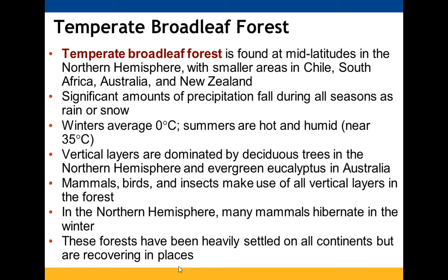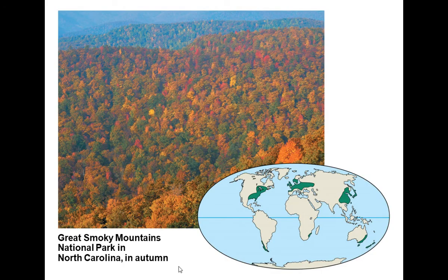Temperate broadleaf forest is found in the mid-latitudes of the Northern Hemisphere, with additional areas in Chile, South Africa, Australia, and New Zealand. It receives lots of precipitation in all seasons, as rain or snow. Winters are cold (near 0 degrees Celsius) and summers are hot and humid (near 35 degrees Celsius). Vertical layers are present; the Northern Hemisphere has deciduous trees, while Australia has evergreen eucalyptus. Mammals, birds, and insects use all vertical layers; some Northern Hemisphere mammals hibernate. These forests have been heavily settled but show some recovery.